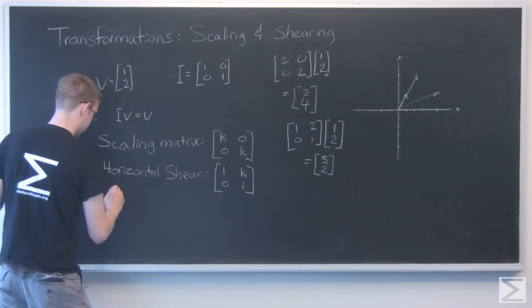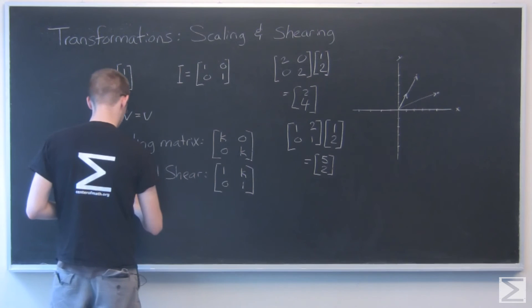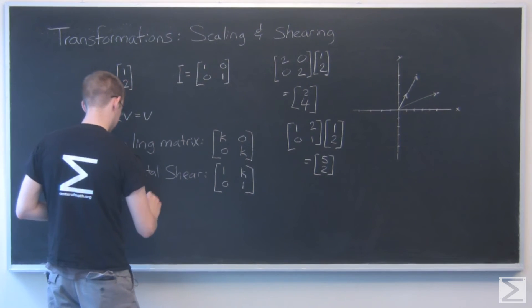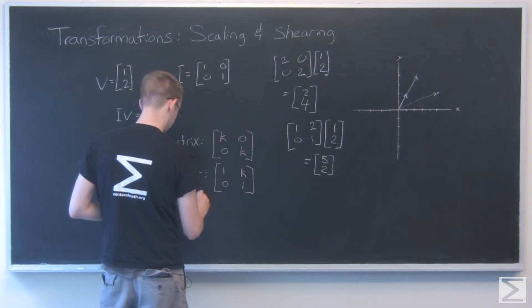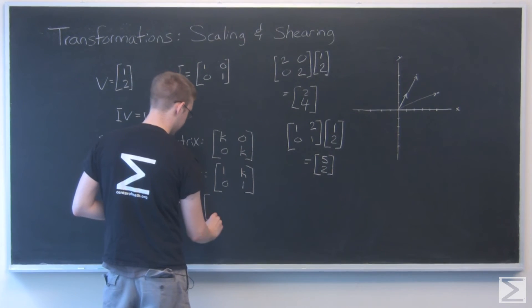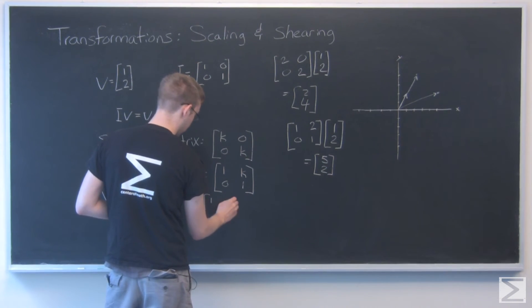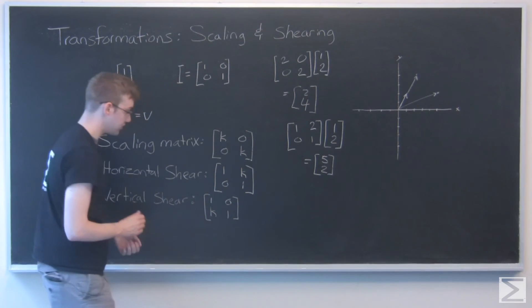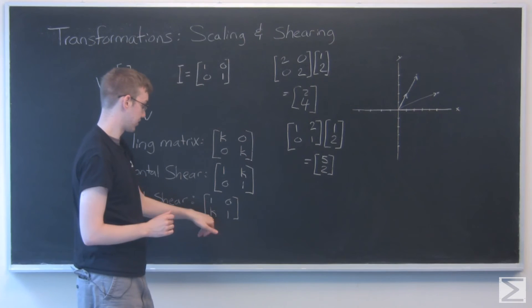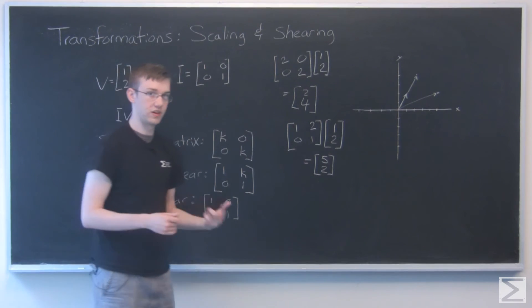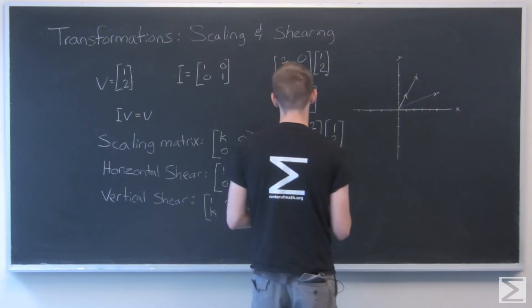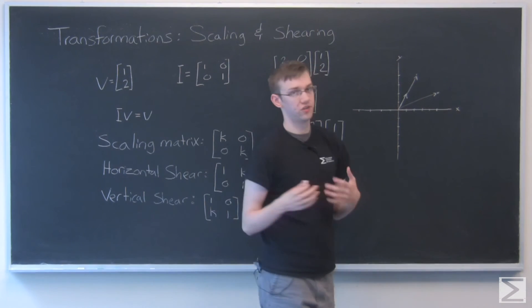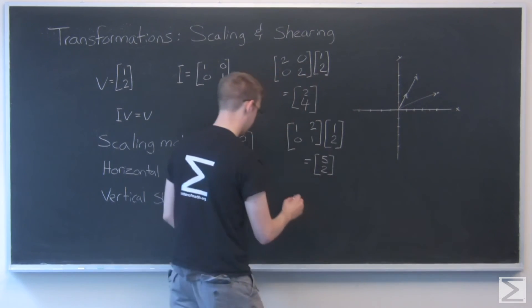If we want to do a vertical shear, you might be able to guess. This time it's 1, 0, k, 1. Again, the identity matrix, but with this k right here. And that'll just affect that y value. So let's try a shear by 2 again, this time in the vertical direction.